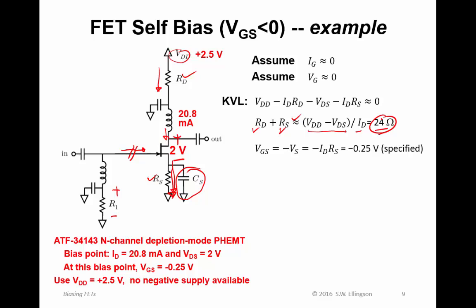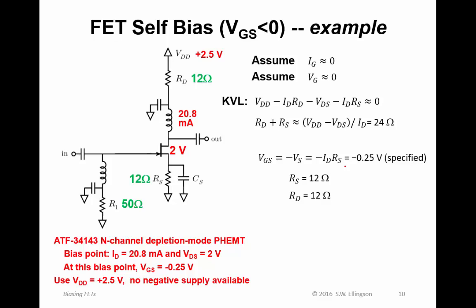V_GS is simply minus V_S, which is minus I_D times R_S, which is specified to be 0.25 volts. So from this, we find that R_S should be 12 ohms. And then the remaining resistance to get to 24 ohms is 12 ohms. So we find that R_S and R_D should both be 12 ohms. Now I've substituted these values. R_S equals 12 ohms, R_D equals 12 ohms.